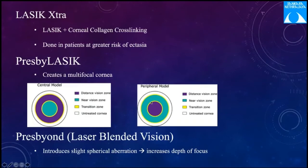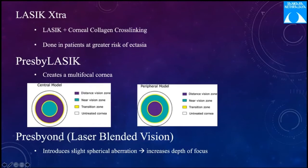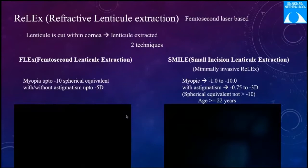LASIK Xtra is LASIK plus corneal collagen cross-linking, done in patients at greater risk of post-op ectasia. PresbyLASIK creates a multifocal cornea and has two types: central model (near vision zone in the center) and peripheral model (near vision zone in the periphery). Presbyond is LASIK blended vision — presbyLASIK plus a slight induced spherical aberration that increases the depth of focus for the patient.